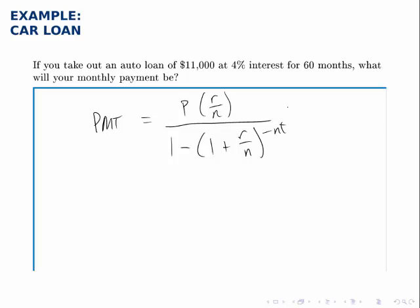Once we have the formula, all we have to do is fill in the pieces we know and find what we don't know. We know that the principal of the loan is $11,000, so that's p. We know that the interest rate is 4%, so we fill that in. We're making monthly payments, so n is 12. And we just fill in the rest of the formula.